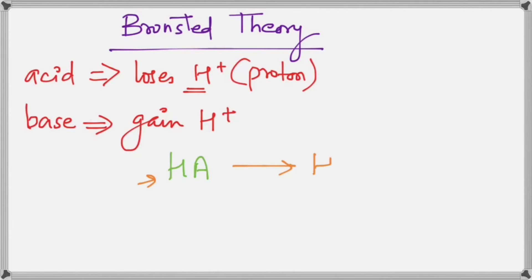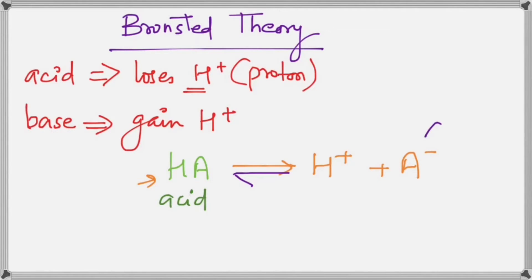The compound HA has an H with it, so it can lose that H and form H⁺ and A⁻ — these are the two ions it can form. This compound lost a proton and therefore it will be called an acid. Now if you take a look at the reverse process of this reaction, the species A⁻ gained a proton to form HA, and that is why we call A⁻ a base.